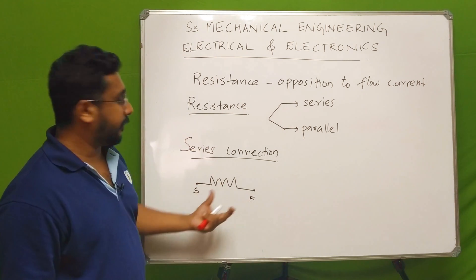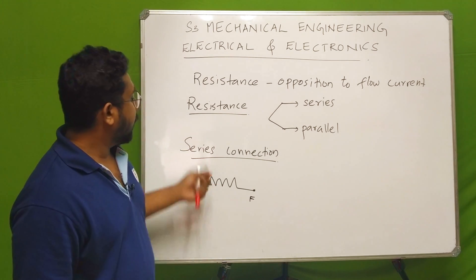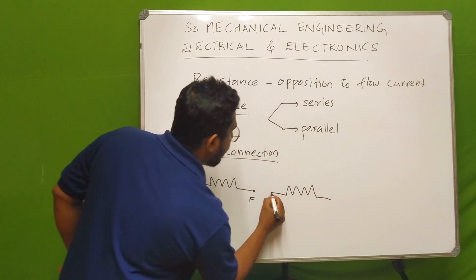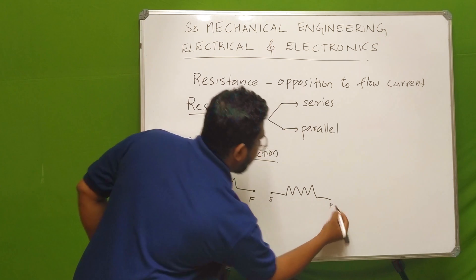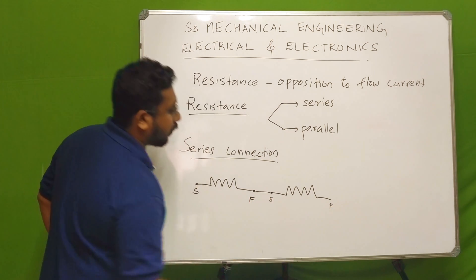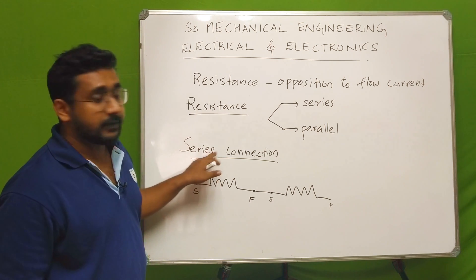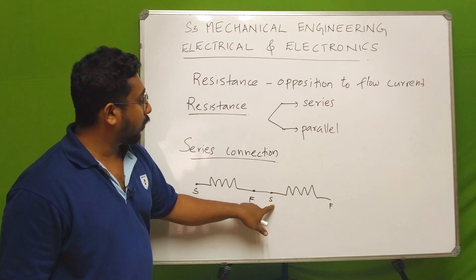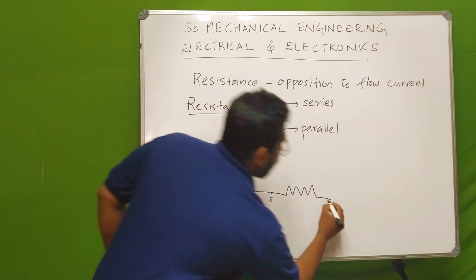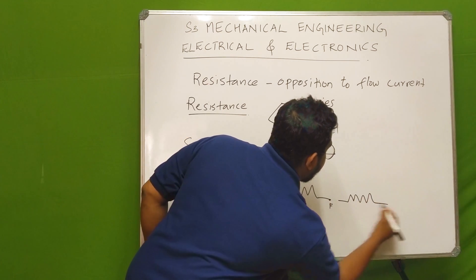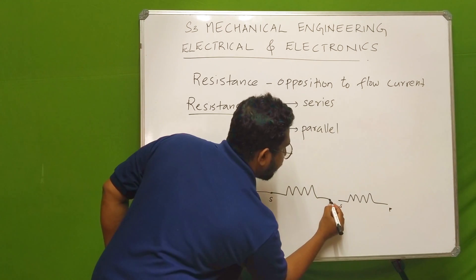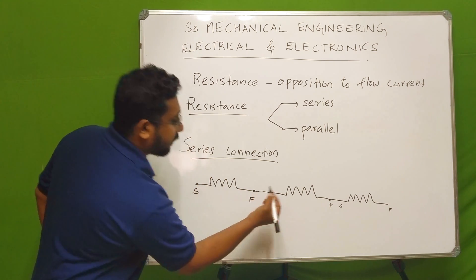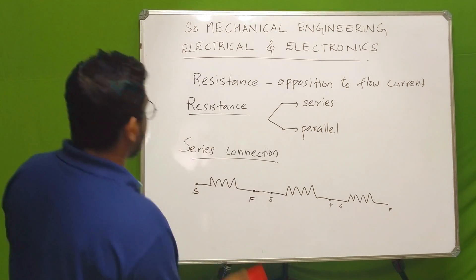This is the series connection — starting end and finishing end. The finishing end of one resistance is connected to the starting end of the next resistance. Starting end and starting end — this is the series connection.